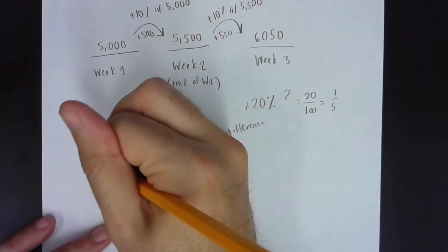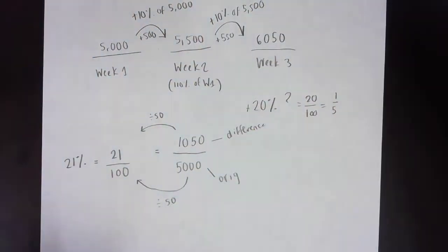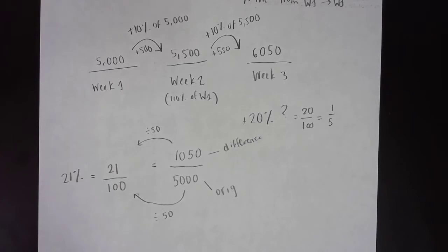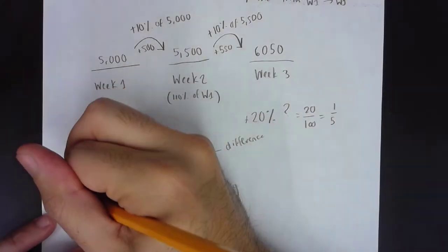21 over 100 is equivalent to 21%. So if the question had been asking, what is the increase from week one to week three, you can simply say there is a 21% increase.